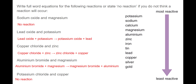There are your answers. For sodium oxide and magnesium, there will be no reaction because sodium is more reactive than magnesium and sodium is already in the compound. For lead oxide and potassium: lead oxide plus potassium gives potassium oxide plus lead, because potassium is more reactive than lead and will displace it. For copper chloride and zinc: zinc is more reactive than copper, so it displaces copper to give zinc chloride plus copper. For aluminium bromide and magnesium: magnesium is more reactive than aluminium, so we get magnesium bromide plus aluminium. Finally, for potassium chloride plus copper: no reaction occurs because copper is less reactive than potassium, which is already in the compound, so copper is not reactive enough to displace it.